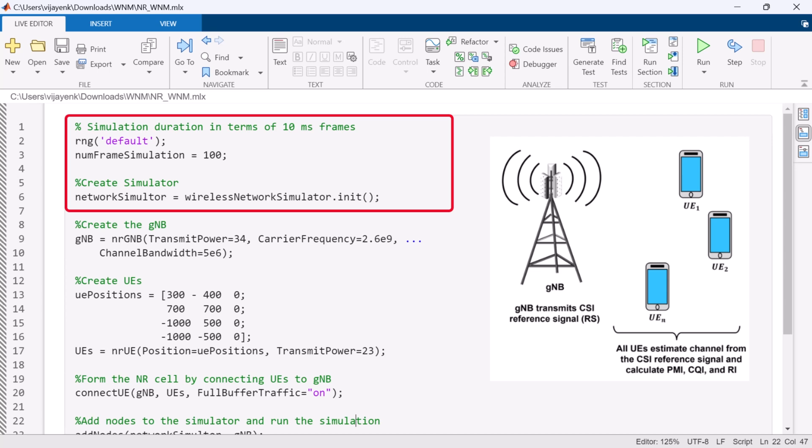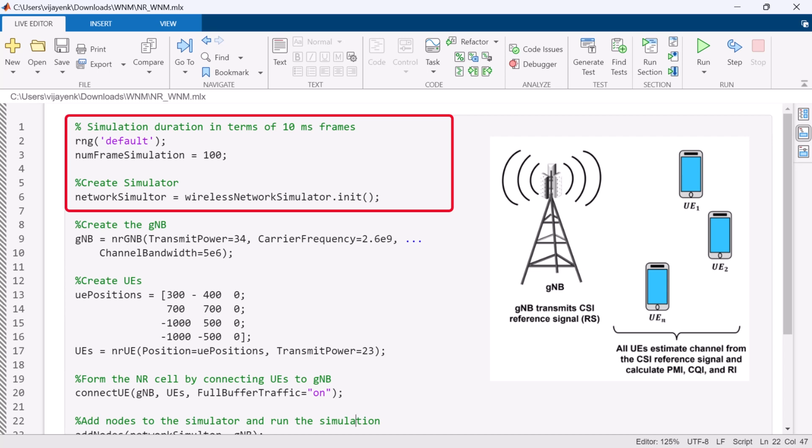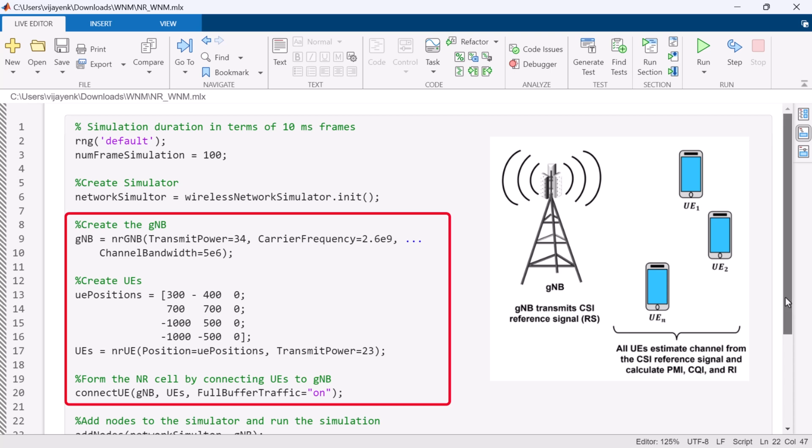First, we initialize the simulator and configure the network scenario. Next, we associate UEs with corresponding GNBs and add network traffic to each node in the network. Finally, we run the simulation and capture the statistics.